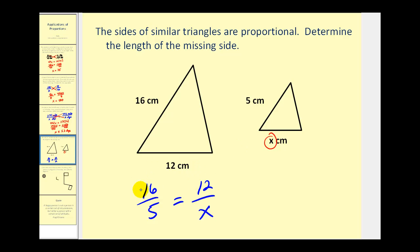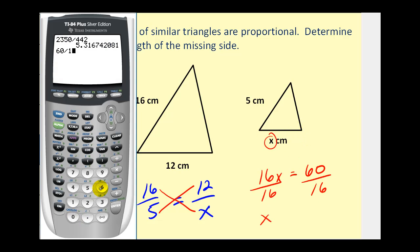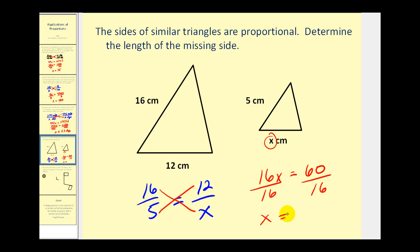So we can say that 16 is to 5 as 12 is to x. Again, it's important that we compare the larger triangle to the smaller triangle consistently, as we did here. So now we'd have 16 times x or 16x must equal 5 times 12. That would be 60. Dividing both sides by 16 will give us the length of this missing side. And 60 divided by 16 is equal to 3.75. So this side has length 3.75 centimeters.